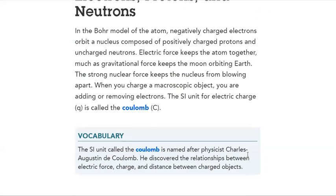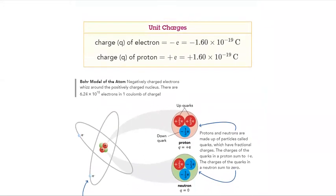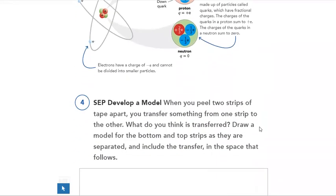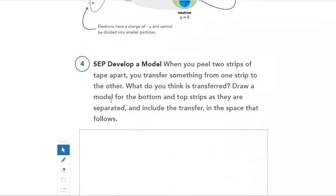What is the Coulomb? The SI unit called Coulomb, named after the physicist. He discovered the relationship between electric force, charge, and the distance between charged objects. We will talk about the charge of electron. What's the charge of proton? And what's the Bohr model of the atom? How is it connected to physics?